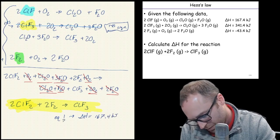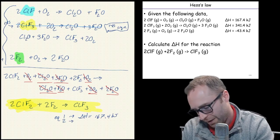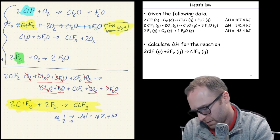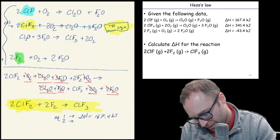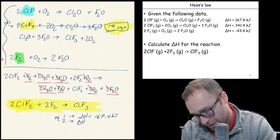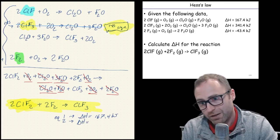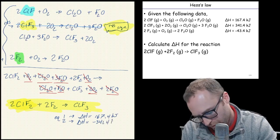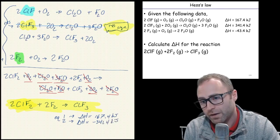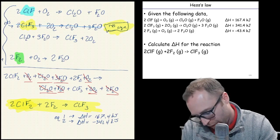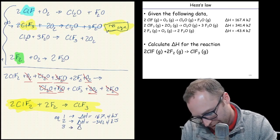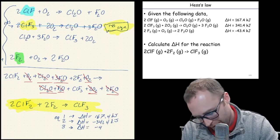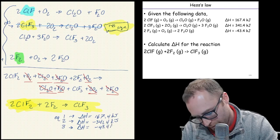Equation two we wrote ourselves a note that we reversed the sign. So now that means for delta H we need to reverse the sign. So now instead of being 341 it's going to be a negative 341.4 kilojoules. For the third equation we did nothing to it. So delta H will still be the negative 43.4 kilojoules.